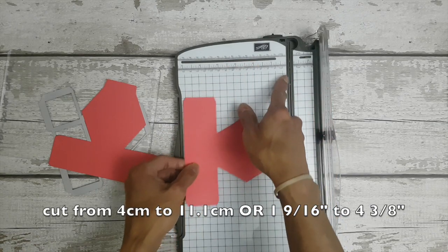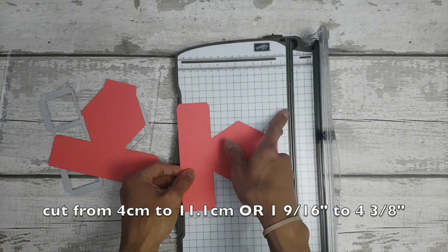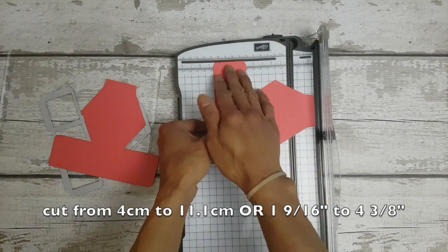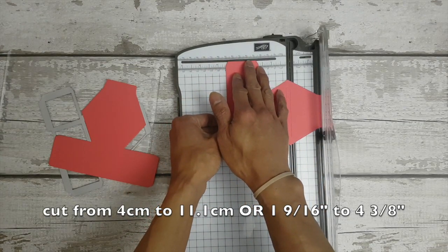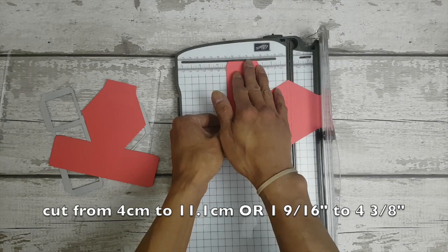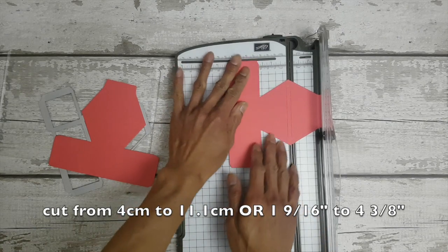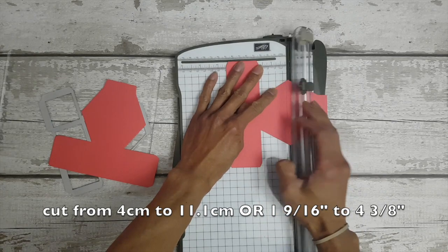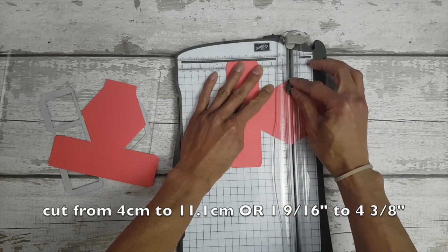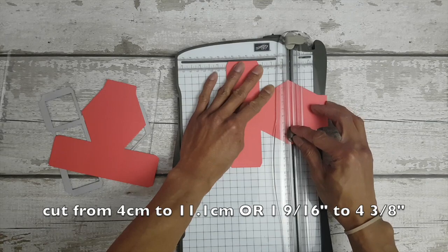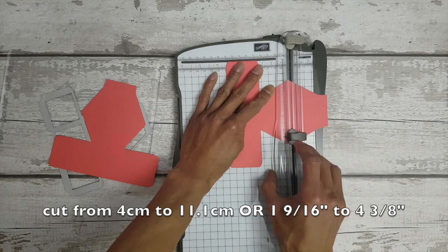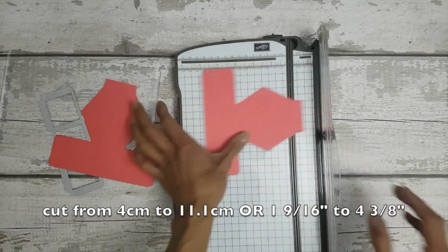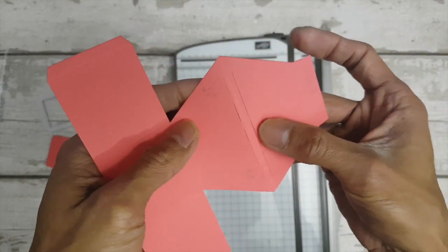And then do the second one but line it on the left side of the cutting path so again that's about an eighth of an inch away from the middle of the hexagon, so again that's four centimeters down to eleven point one centimeters or four and three eighth of an inch so you will have two cut lines.